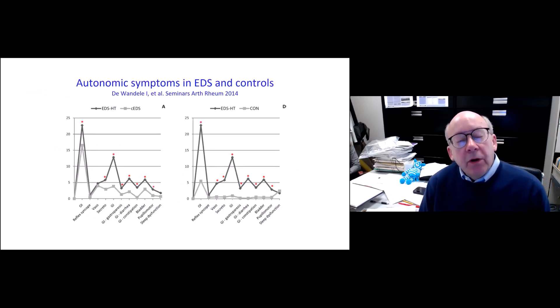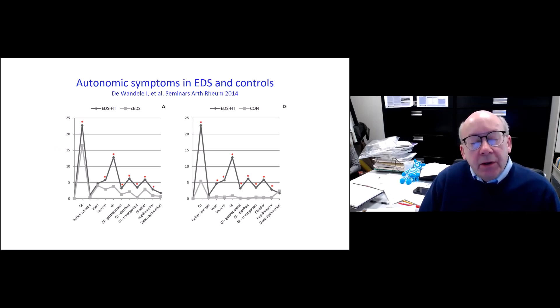So we think that autonomic symptoms and orthostatic intolerance in EDS are among the most treatable problems for patients with Ehlers-Danlos syndrome. And one of the better papers that summarized all of these symptoms was done by Inge Devondale from Belgium, published in 2014.